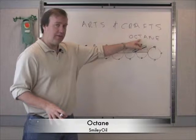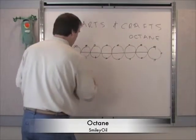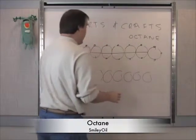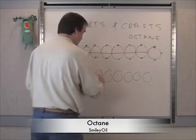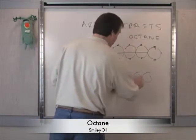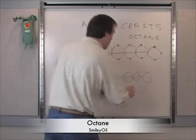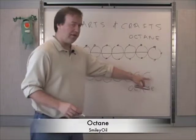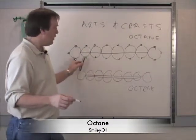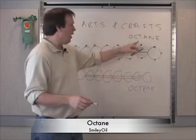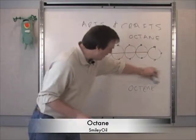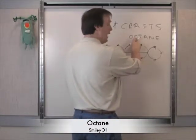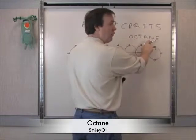We also know that if you have a string of beads with two strings going through them, then we call it octene. So octene means two strings in it. At this factory, all we want to do is build octanes — a string of beads that has eight beads in a row connected with one string.